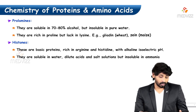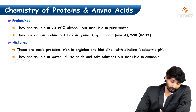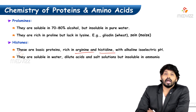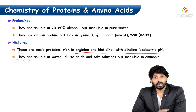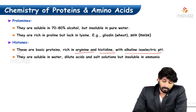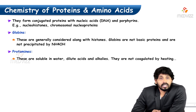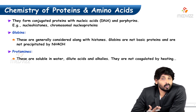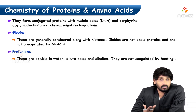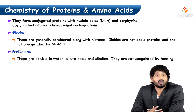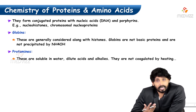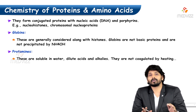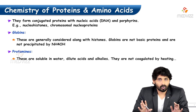Histones are basic proteins rich in arginine and histidine, having an alkaline isoelectric pH. They are soluble in water and dilute acids but insoluble in ammonia. They conjugate with nucleic acids to form nucleohistones — chromosomal nucleoproteins. Globins are generally considered alongside histones; however, globins are not basic proteins and are not precipitated by ammonium hydroxide.